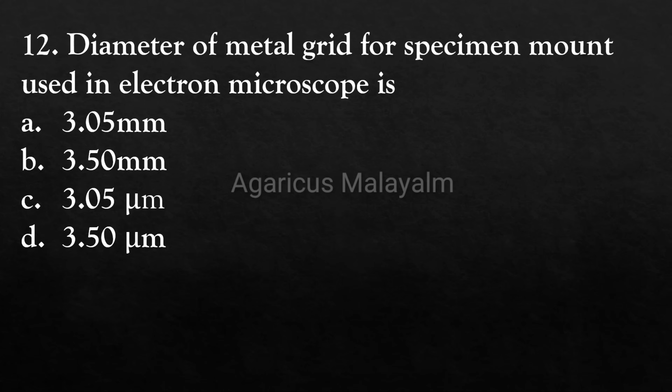Twelfth question: What is the diameter of the metal grid for specimen mount used in electron microscopy? Answer options: Option A - 3.05 mm, Option B - 3.50 mm, Option C - 3.05 micrometer, Option D - 3.50 micrometer. Correct answer: Option A - 3.05 mm.